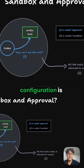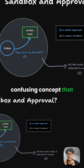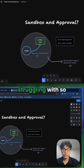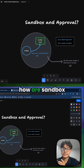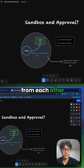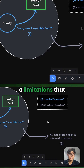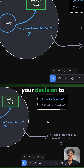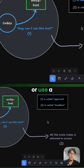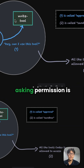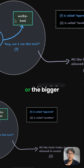The first thing we have to learn about Codex configuration is sandbox and approval. This is probably the most confusing concept that Codex beginners struggle with. Think of sandbox as the constraints or limitations you are putting on your agent, and approval is your decision to allow or disallow your agent to do a certain task or use a certain tool.